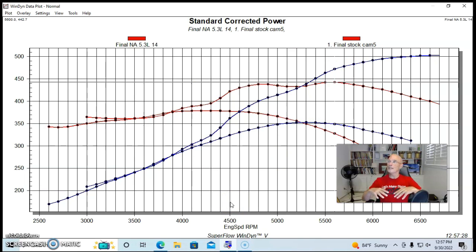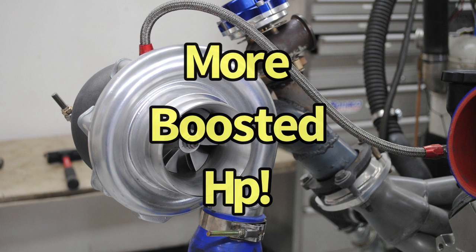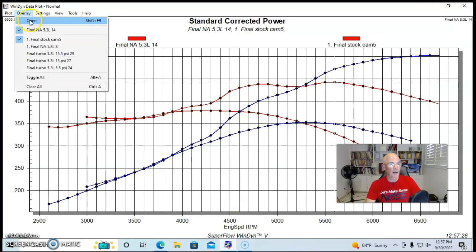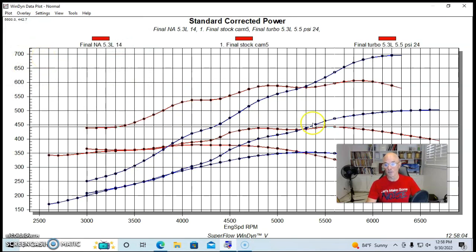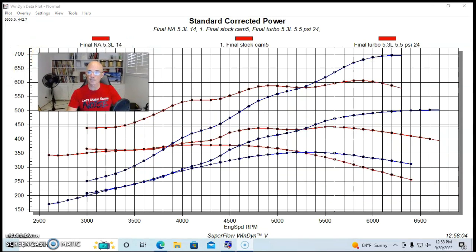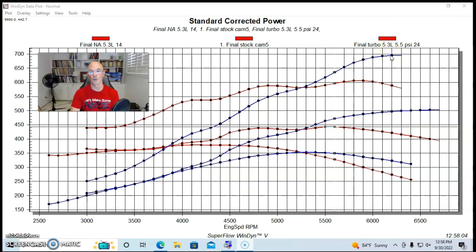So we've improved the naturally aspirated combination dramatically. And I want to show you the benefit of that because when we improve the power output of our naturally aspirated combination, now everything that we do under boost is multiplied. So let's take a look. We're starting off with around 500 horsepower NA. Here's what happens when we add just five and a half pounds of boost. I'm going to go ahead and move myself over here. At five and a half pounds of boost, we're almost making 700 horsepower. That gives you an idea of the benefit of starting off with something that's a powerful NA combination. We add very little boost and all of a sudden we're making some fairly serious horsepower.